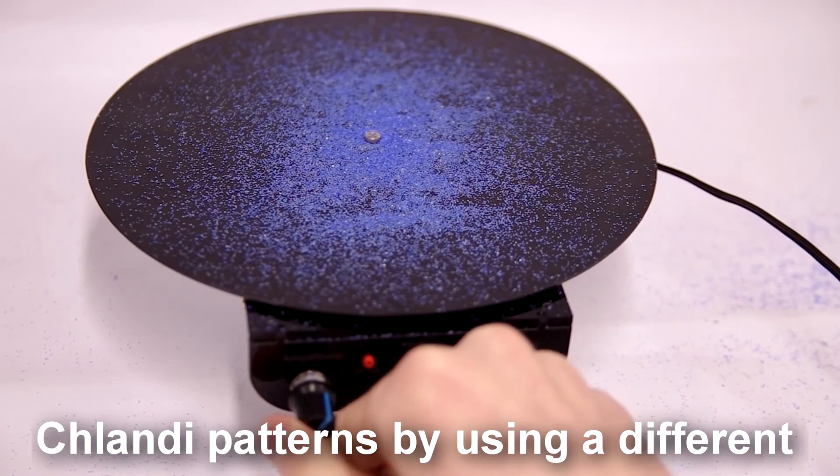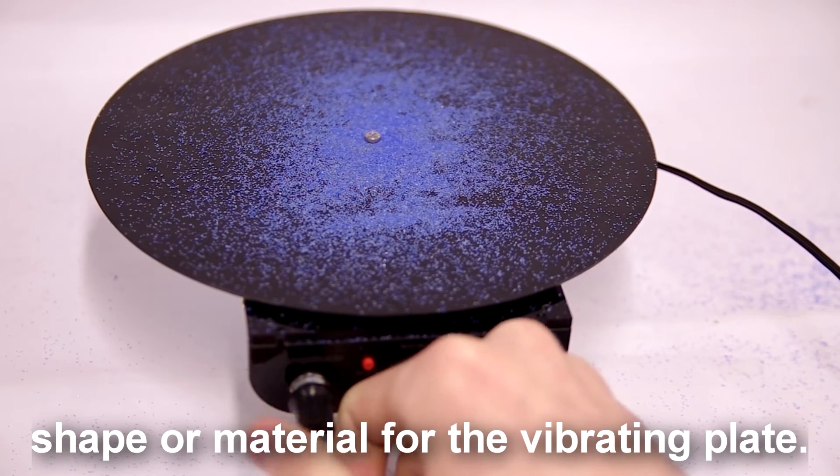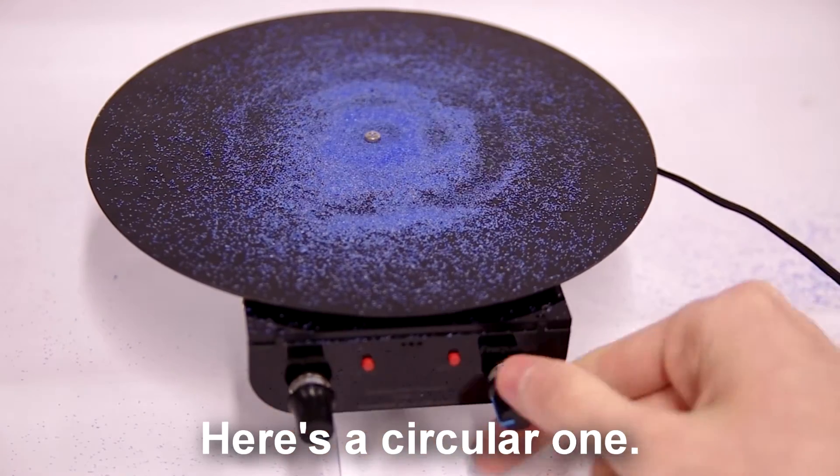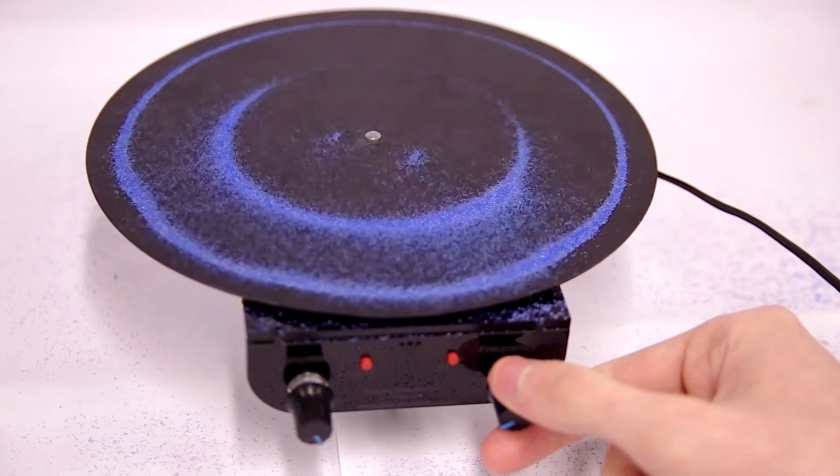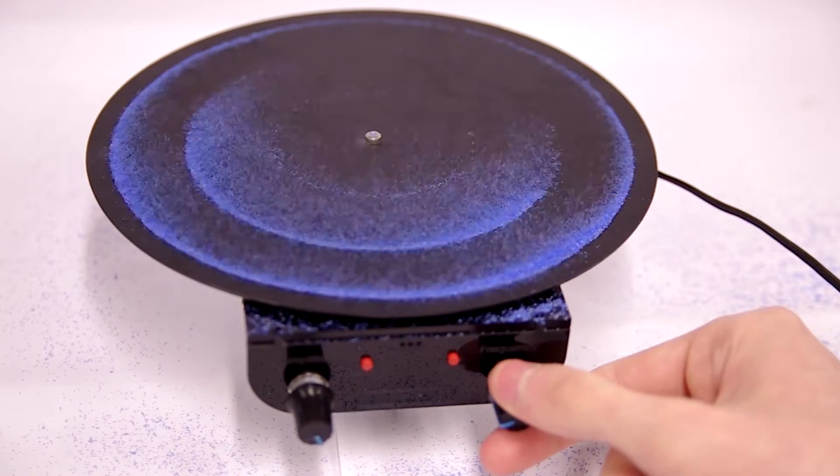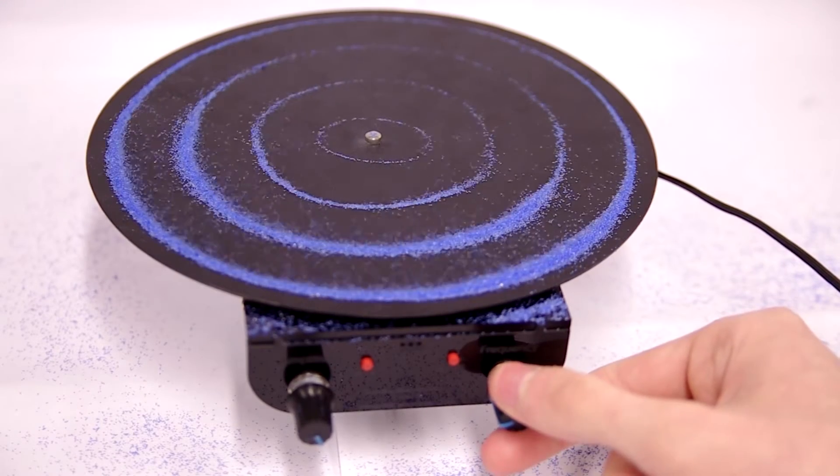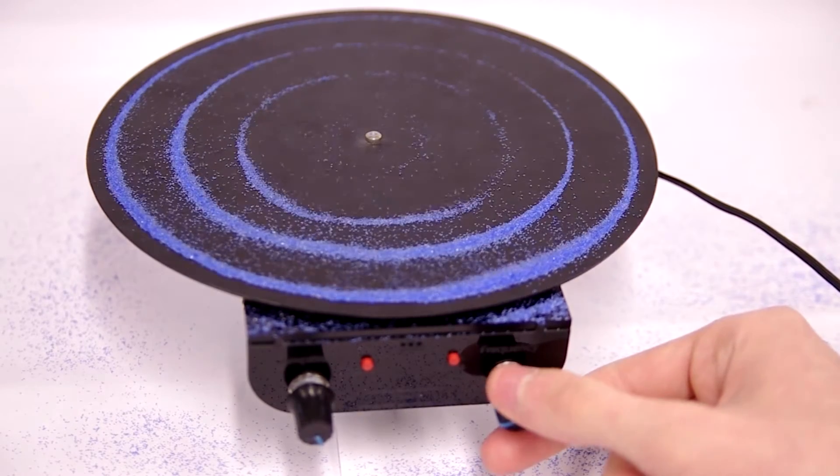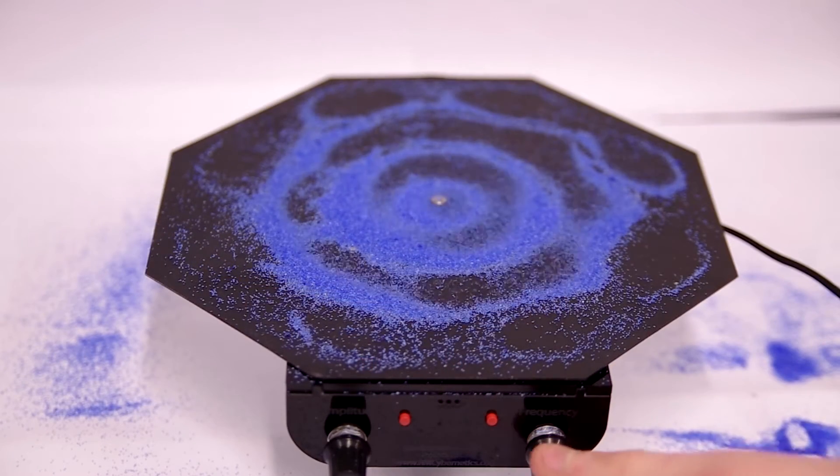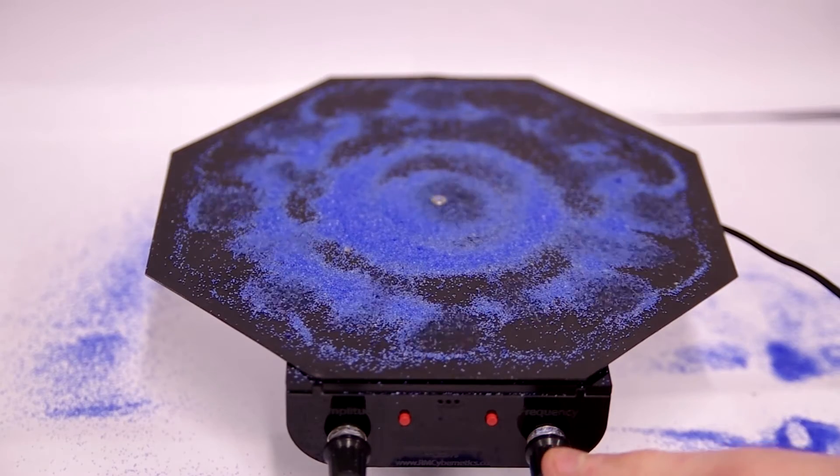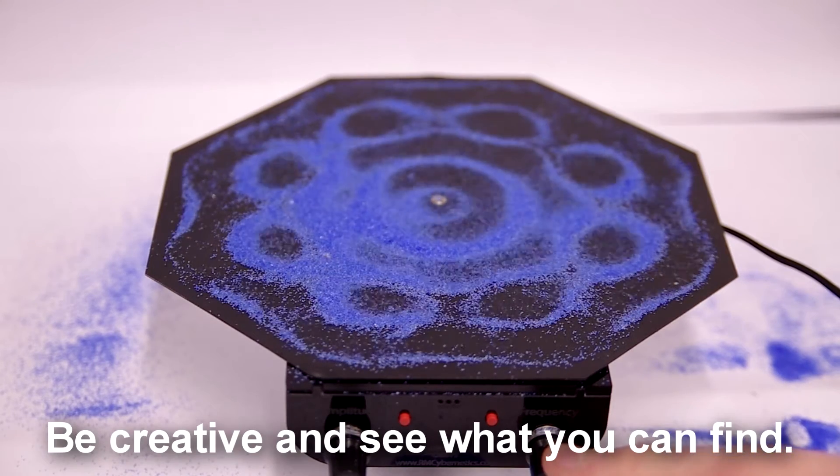You can change the shape of the Chladni patterns by using a different shape or material for a vibrating plate. Here's a circular one. Or a hexagonal one. Be creative and see what you can find.